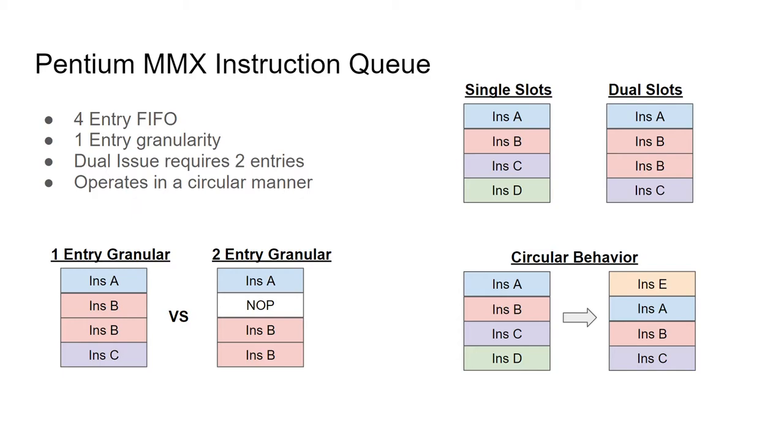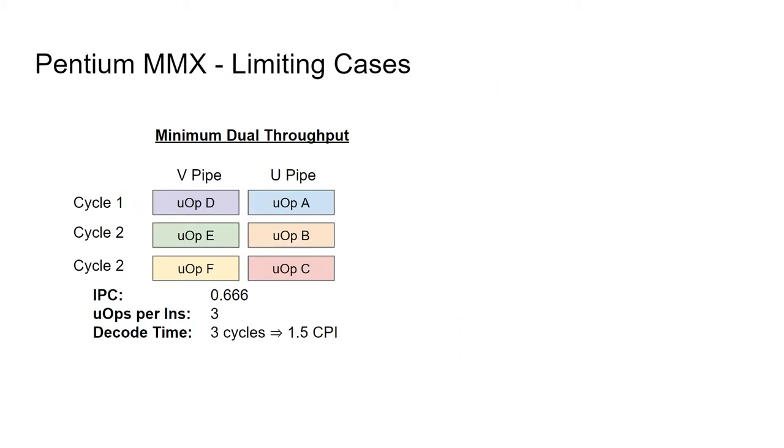Also, note that the FIFO operates as a circular ring, which allows for the queue to be simultaneously read and written from different parts of the pipeline. The first thing to consider when looking at how the back-end affects the required length decoder throughput is the limiting cases. We essentially have two limiting cases to consider if we want to maximize throughput.